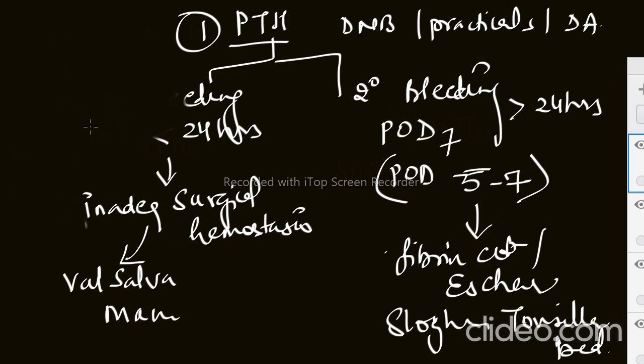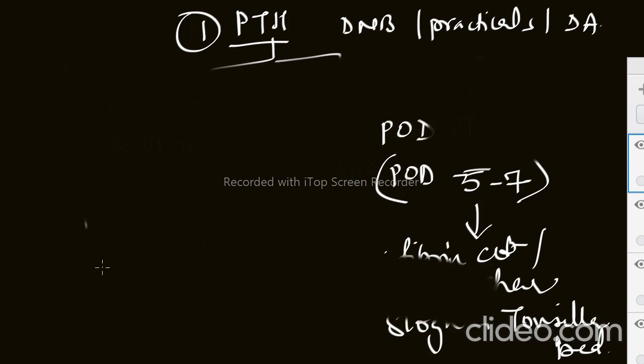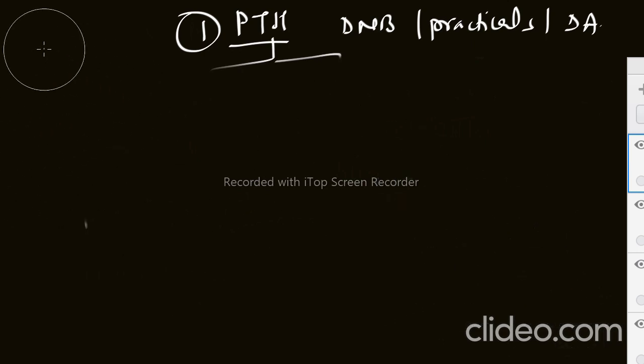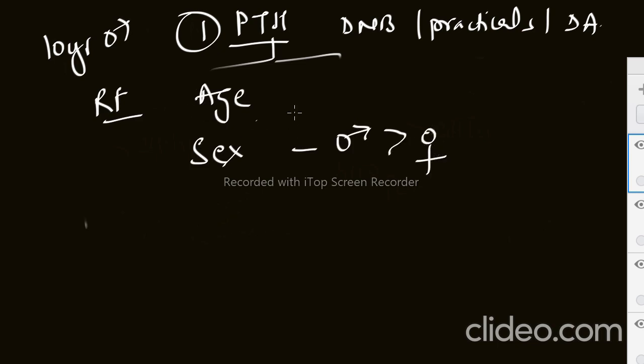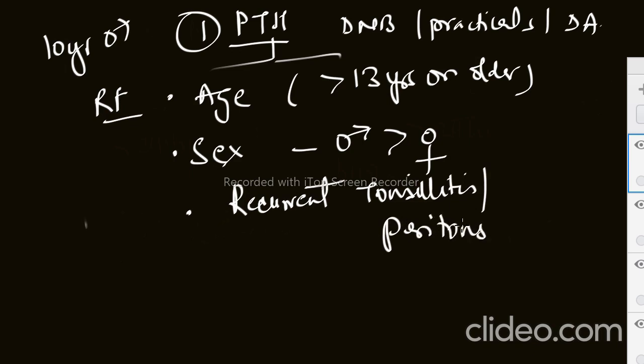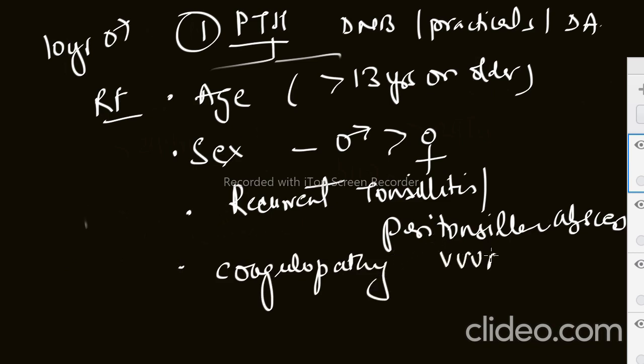After this, the important topic is risk factors. As we saw in the history, the patient was a 10-year-old male. The risk factors are: age and gender, in which males are more common. Age - you can say up to 13 years or older. Then recurrent tonsillitis or peritonsillar abscess, and coagulopathies like von Willebrand disease. These are all the risk factors which we also saw in the history.